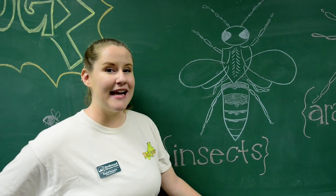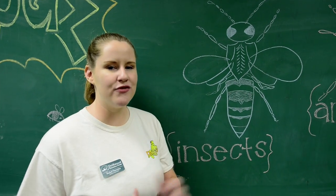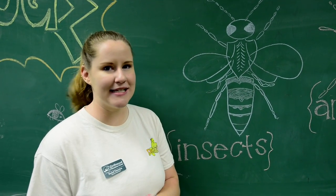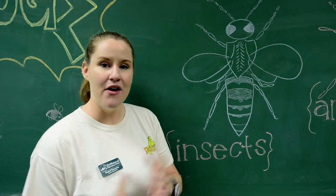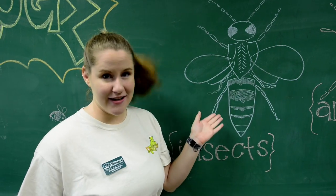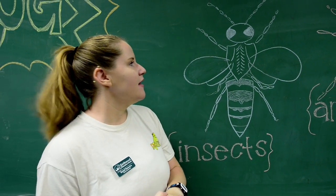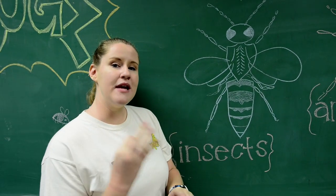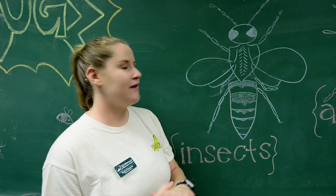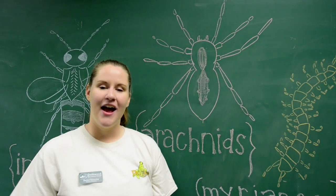Insects can vary a ton but they usually have general characteristics in common. For example, they have six legs and they mostly have wings. They also have three parts of their body: the head, the thorax, and the abdomen.